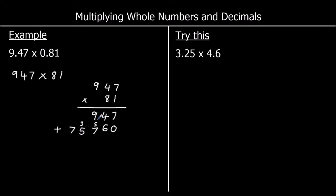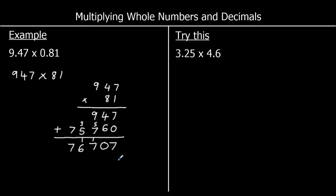Now add the two rows: in the ones, 7 plus 0 is 7. In the tens, 4 plus 6 is 10 — 0 in the tens, carry 1. In the hundreds, 9 plus 7 plus 1 is 17 — 7 in the hundreds, carry 1. In the thousands, 5 plus 1 is 6. In the ten-thousands, 7. So the answer is 76,707.